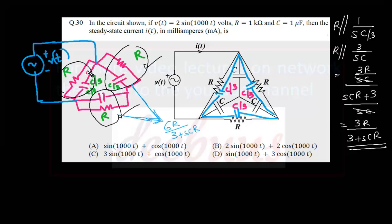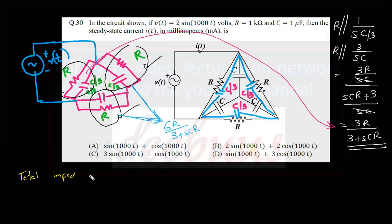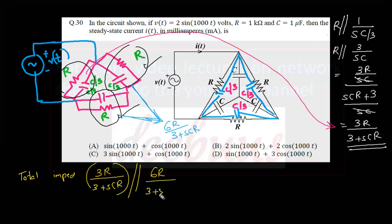And this element R parallel C/3 turns out to be 3R/(3+SCR). We have to calculate the current. Current is voltage by impedance, so we have to first of all calculate the total impedance. Total impedance must be 3R/(3+SCR) in parallel with the summation of these two elements, that is 6R/(3+SCR).